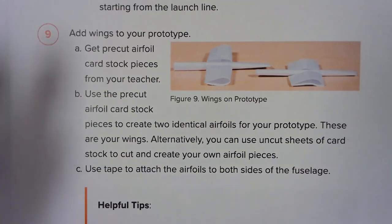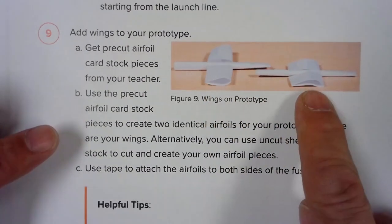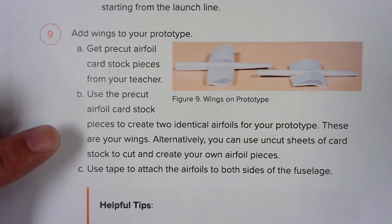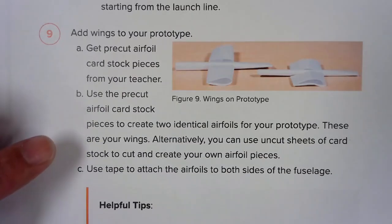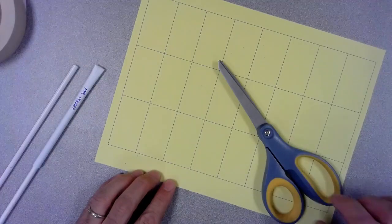Step number nine says we're going to make the wings and add them to the fuselage. Step A says get your cardstock with the airfoil shapes from your teacher, then you're going to create two identical airfoils, a high camber and a symmetrical camber that you learned about earlier, and then you're going to tape those onto your fuselage. Not a whole lot of instructions, so let's watch the video to learn a couple hints.